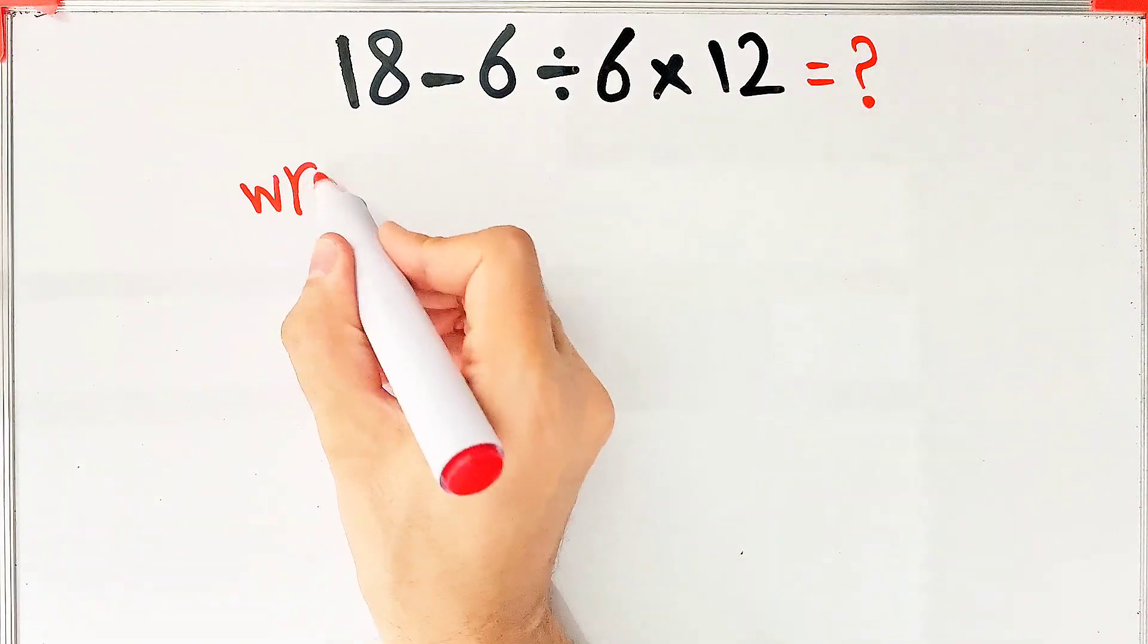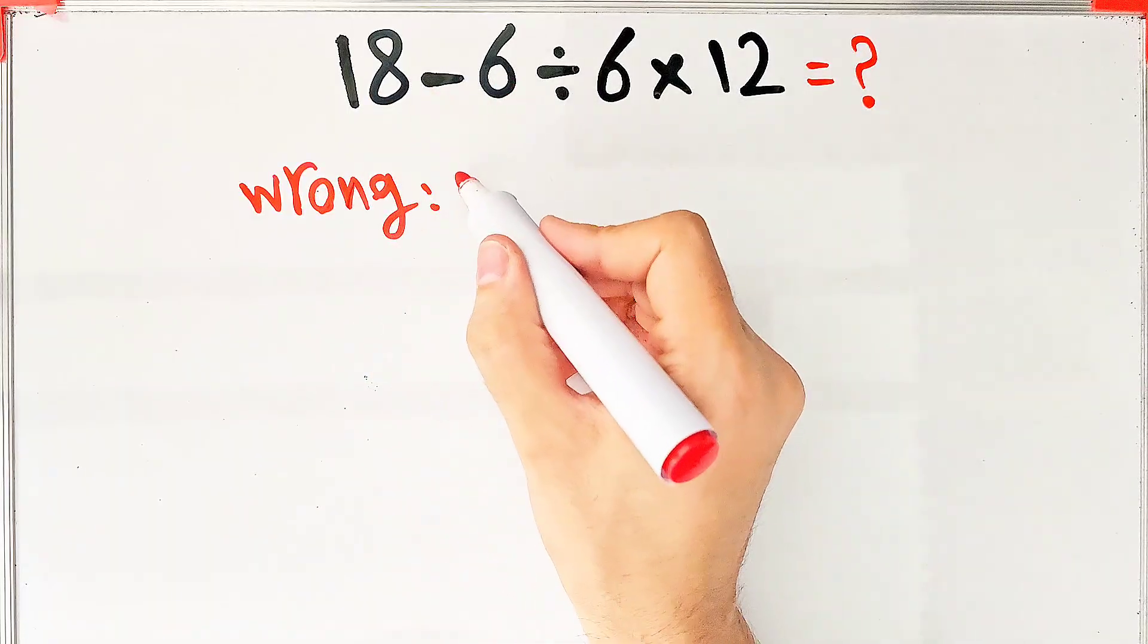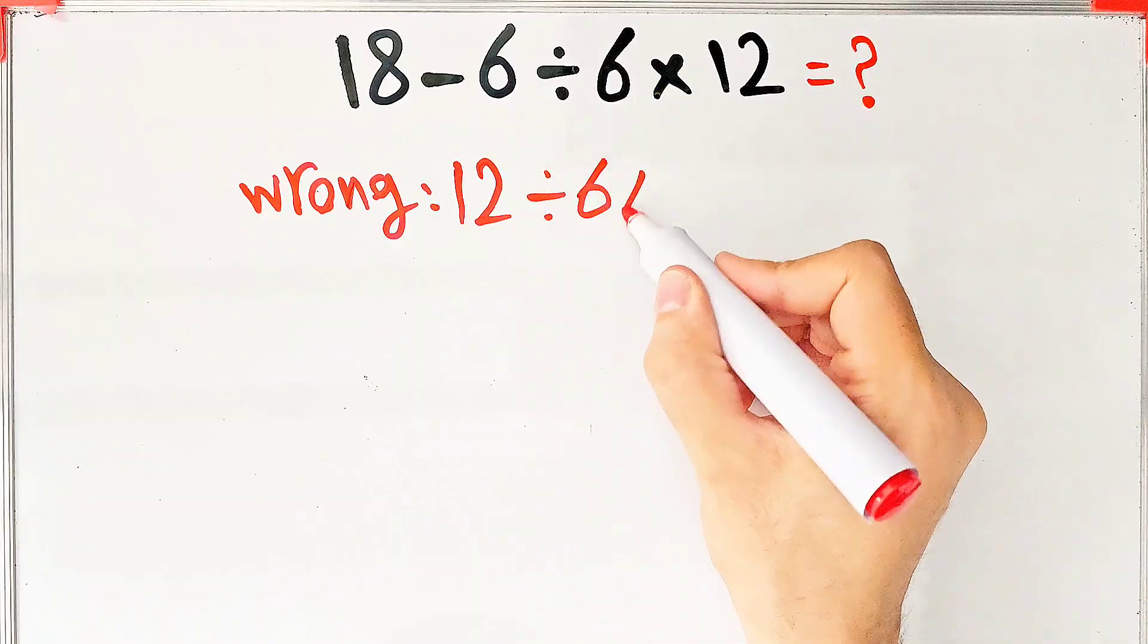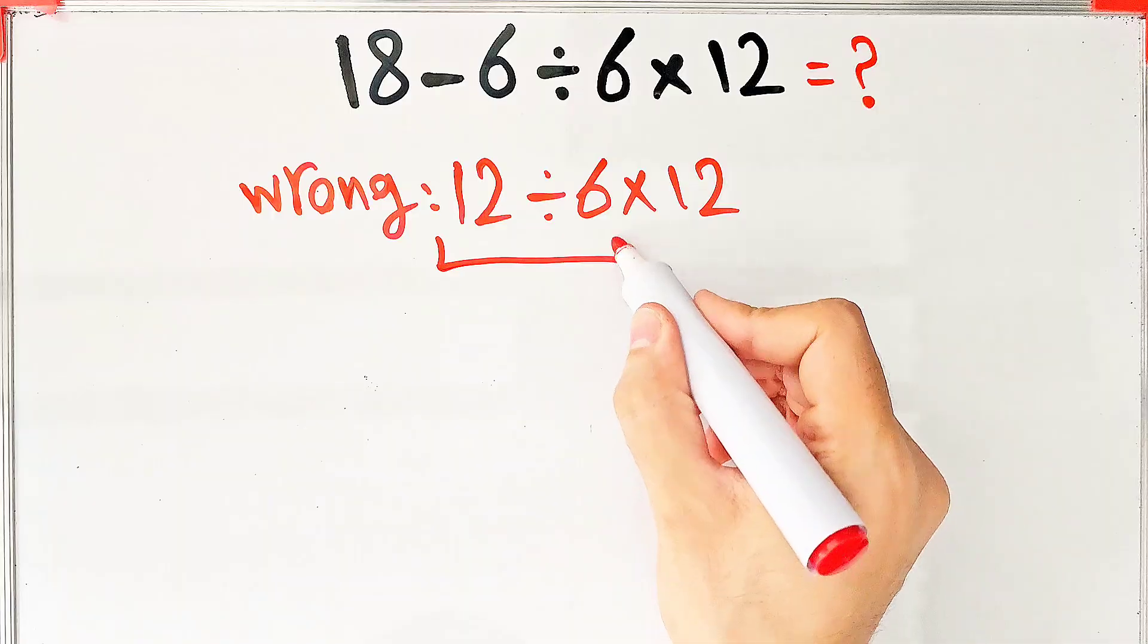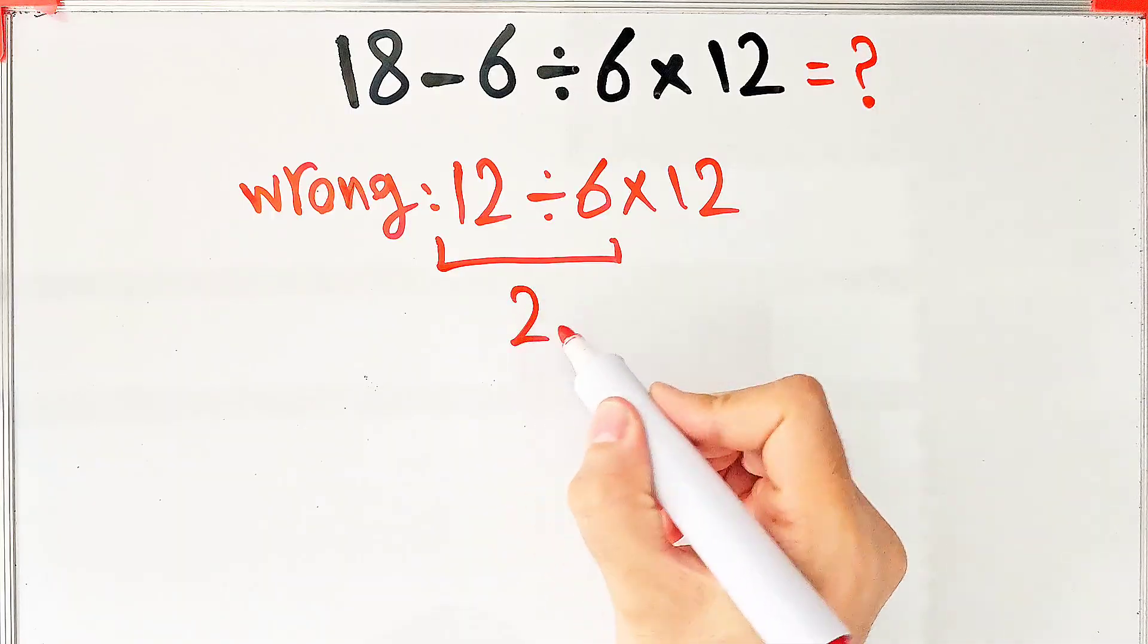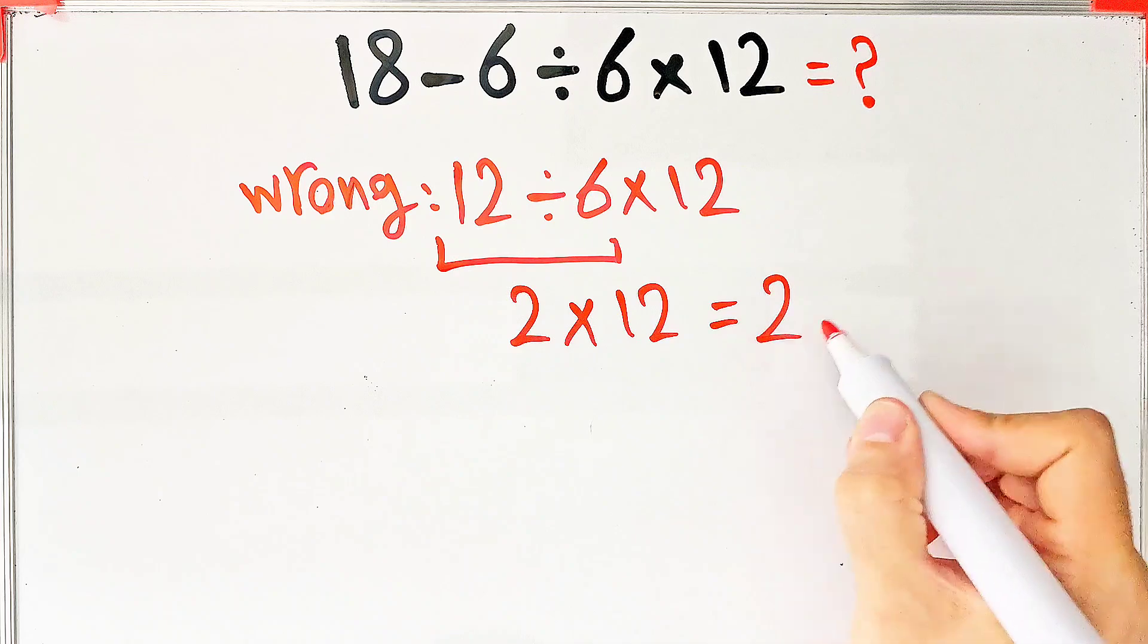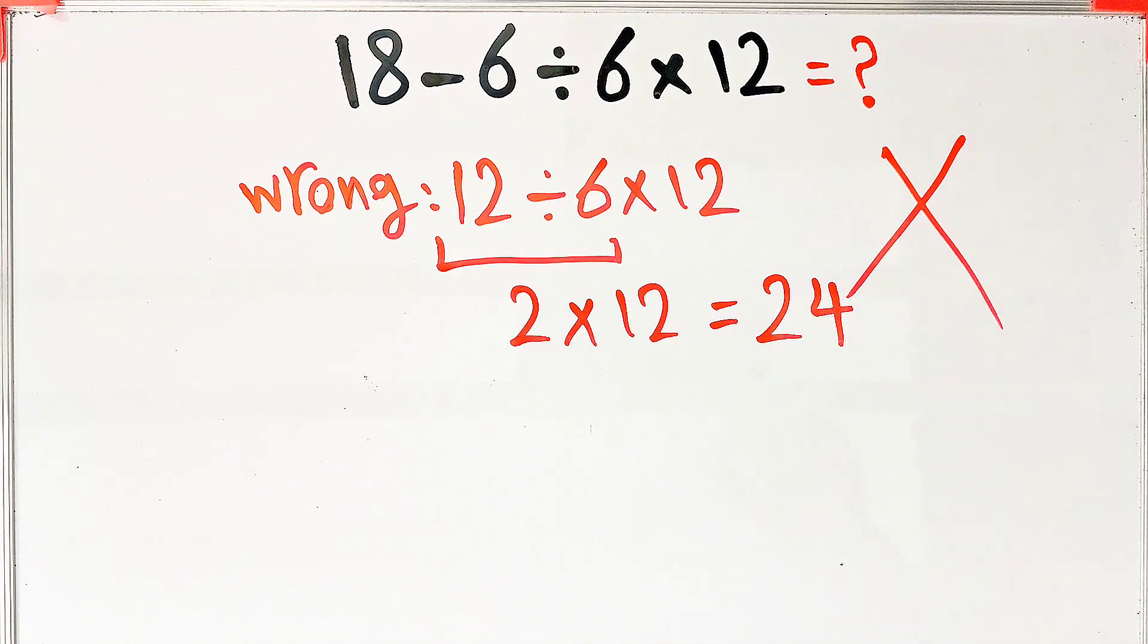In the wrong way of solving this question, some people solve this question like this: 18 minus 6 equals 12, 12 divided by 6 then times 12. 12 divided by 6 equals 2 and 2 times 12 equals 24. They say the final answer of this question equals 24, but it's definitely wrong.